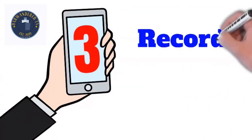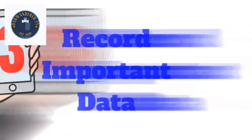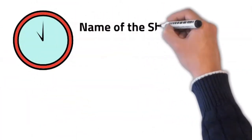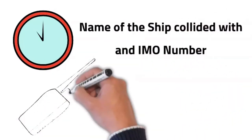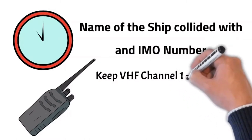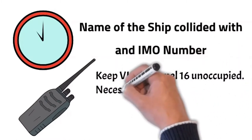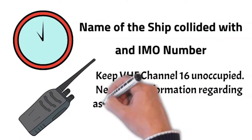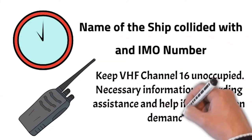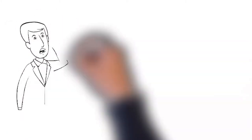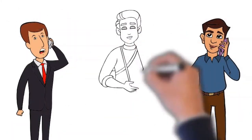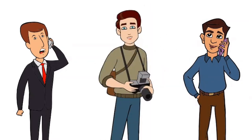3. Record important data. Record the time of ship collision, name and IMO number of the vessels you collided with. Waste no time in arguing with other vessel. Leave VHF channel 16 unoccupied, through which you can get necessary information regarding assistance and help if the situation demands. Use any other VHF channel for inter-intra ship communication. If possible, take a photograph of the collision from a secure location.